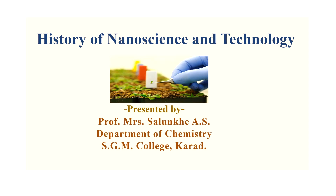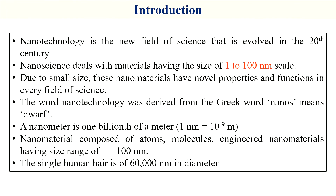Welcome everyone. This video will highlight the history of nanoscience and technology. First, we see what is meant by nanomaterials and nanotechnology. Nanotechnology is a new field of science that evolved in the 20th century. Nanoscience deals with materials having a size of 1 to 100 nanometer scale, and materials comprising that size range are known as nanomaterials. Due to their small size, these nanomaterials have novel properties and functions in every field of science.